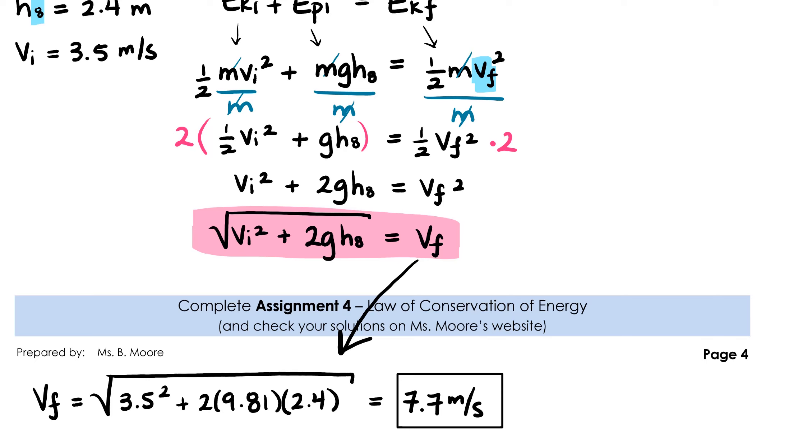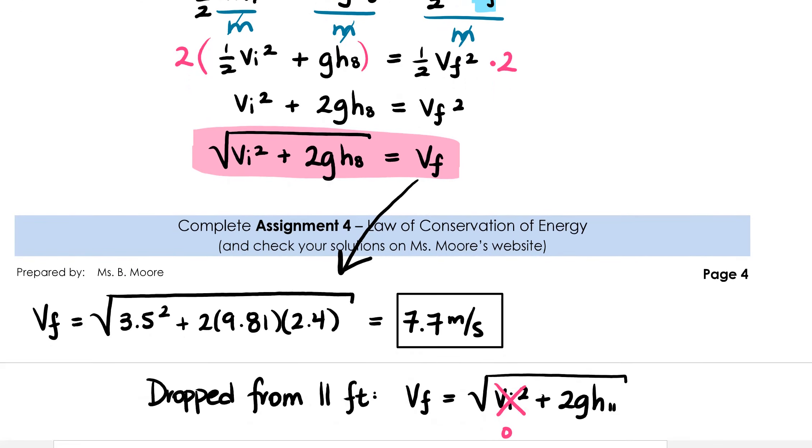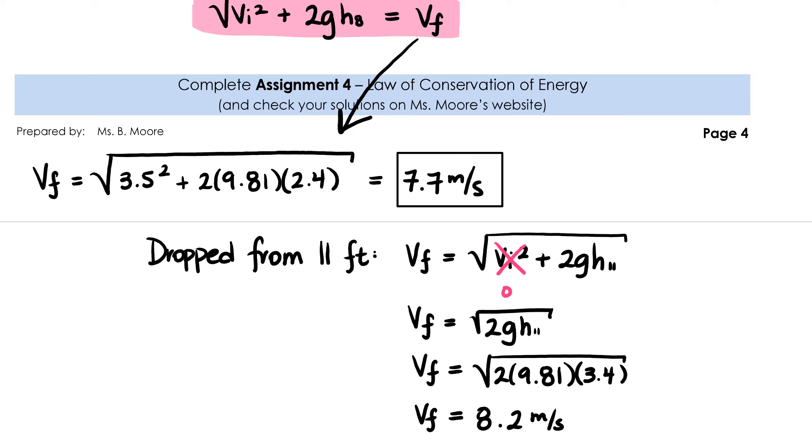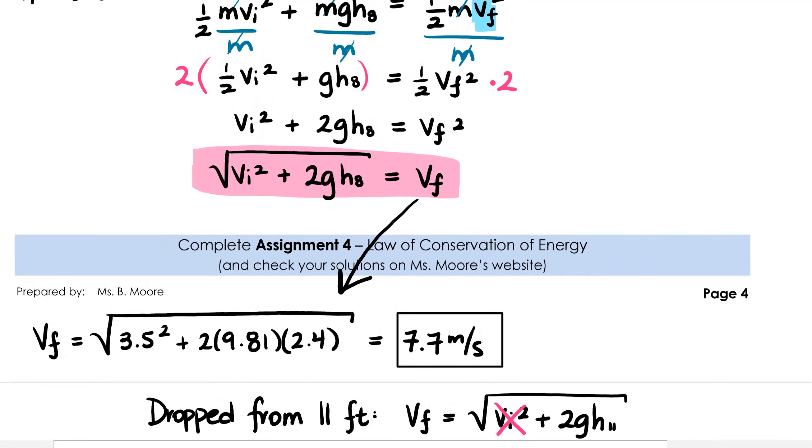When the iPhone is thrown from a height of 8 feet, it's traveling at 7.7 meters per second right before it hits the ground. But will it survive? In order to know that, we have to perform a calculation where the iPhone is dropped from 11 feet. Now we can cheat a little bit here because we've already done all the algebra to build an equation for when an object is thrown. You'll notice that the only difference between the equation for when an object is thrown and when it's dropped is that we have a v initial squared in it. We can use this same equation and acknowledge that v initial is 0 if the object is dropped. So then our equation becomes v final equals the square root of 2 times gravitational acceleration times height. Since the iPhone was going 8.2 meters per second when it was dropped from a height of 11 feet, it will definitely survive its throw from 8 feet when it's only going 7.7 meters per second.